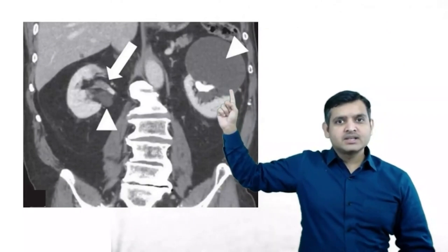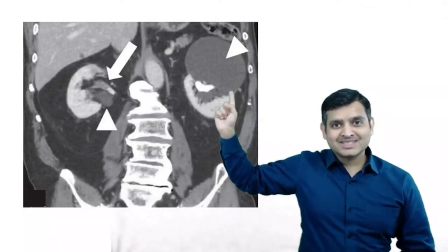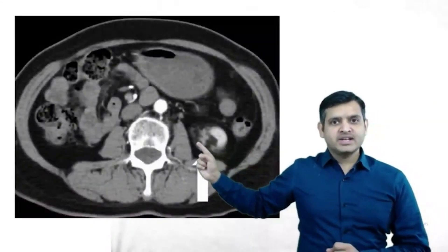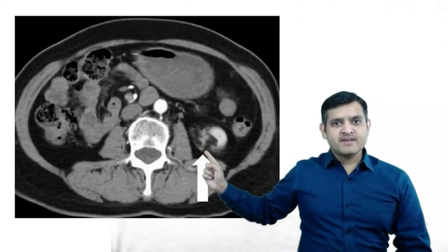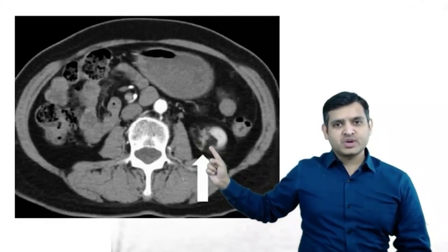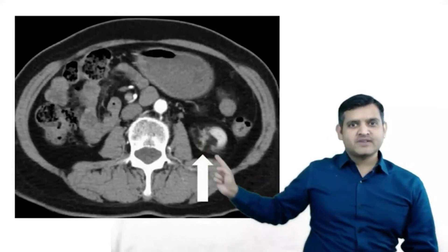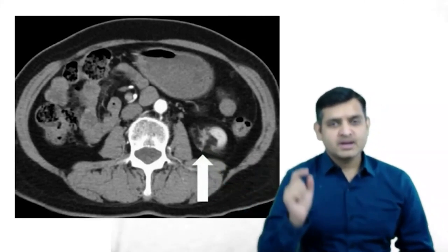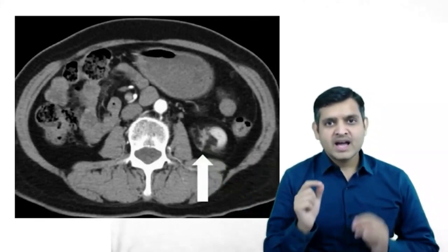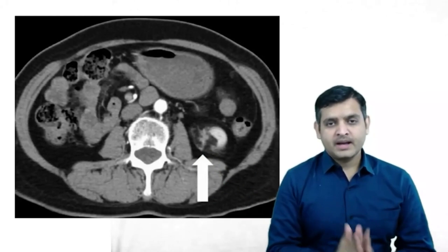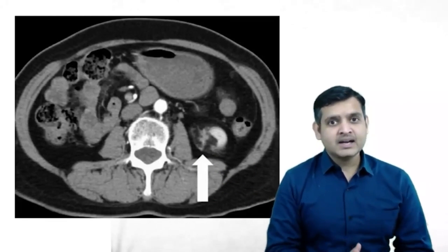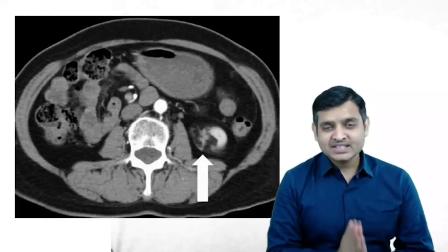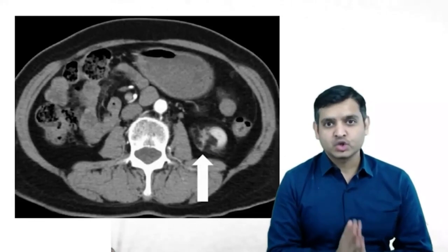If you see a mass in the kidney which is having fat attenuation, which you can see with the subcutaneous fat over here, please remember you are dealing with a case of angiomyolipoma. It is to be noted that bilateral angiomyolipomas are seen in tuberous sclerosis.